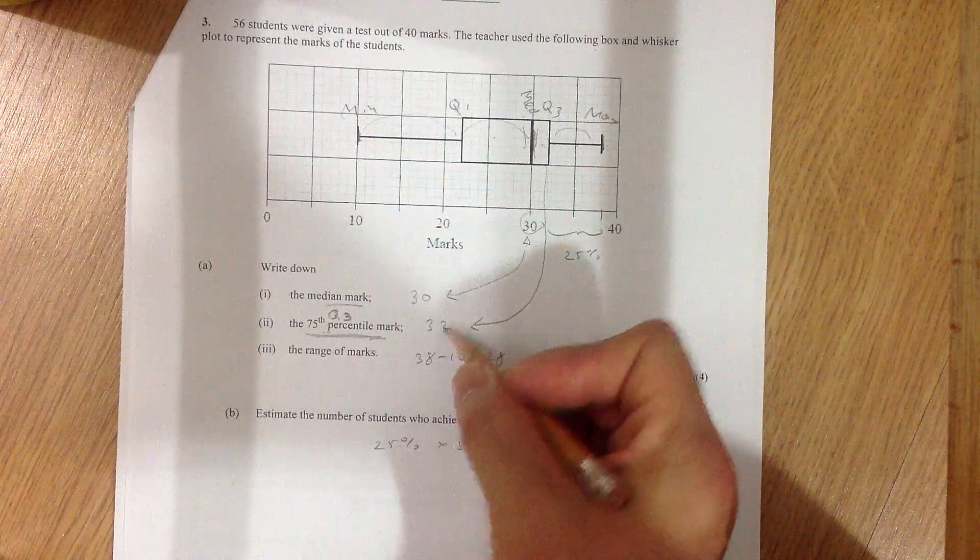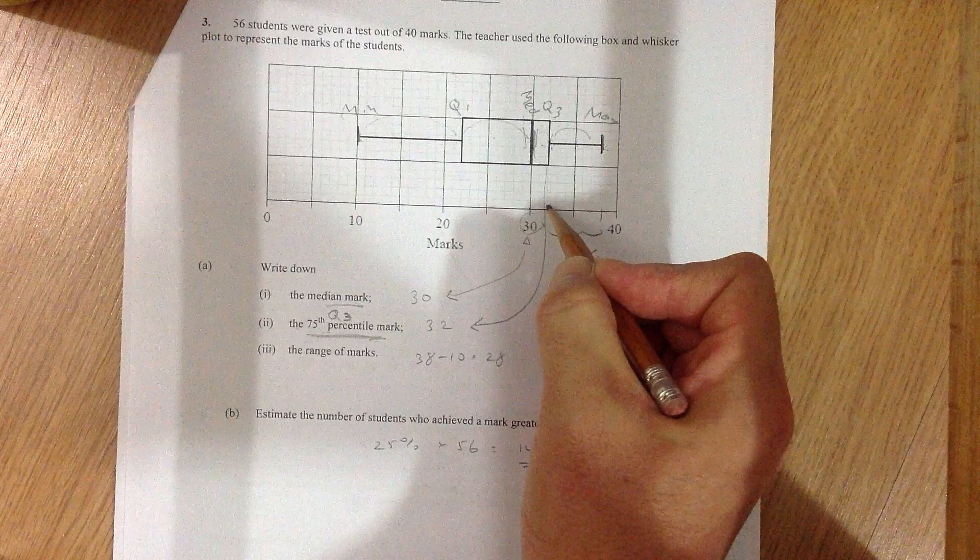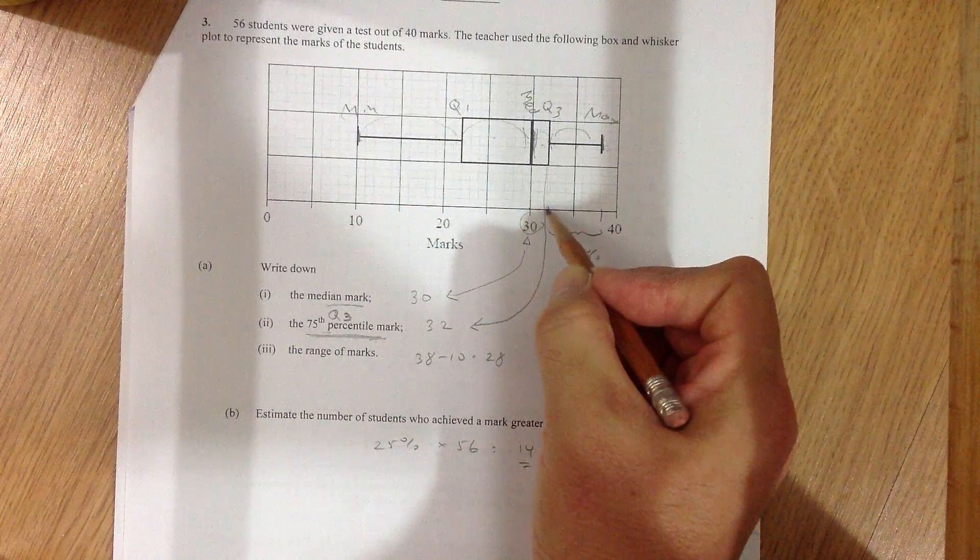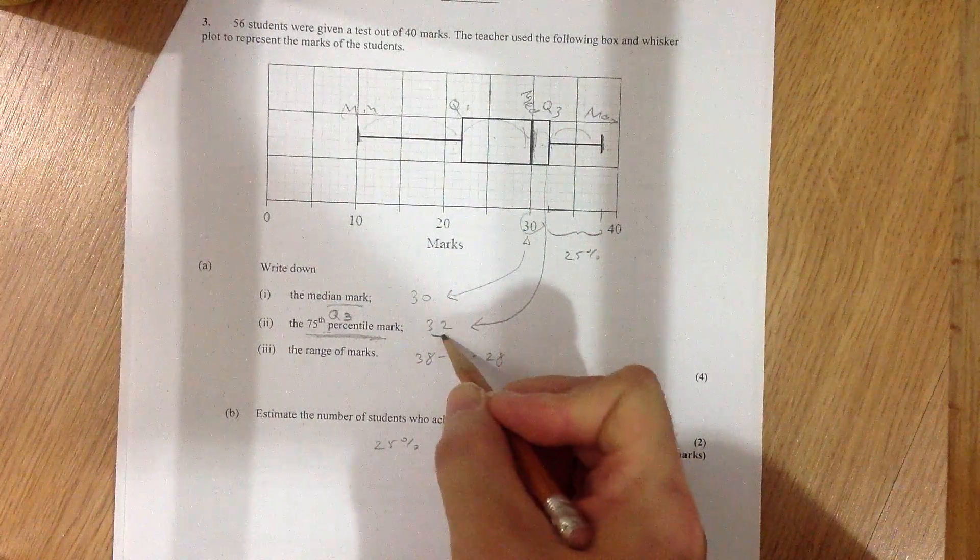So let's see, where is Q3? Q3 is here. It's about 32. If you look, it's clearly 32, actually. So 32 is Q3.